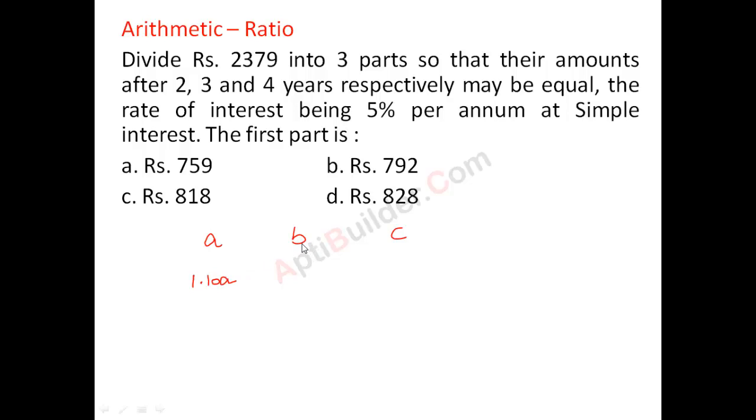So at B you will be getting 5% into 3, 15% interest so it will become 1.15B. And C it will become 1.20C. So these amounts are equal.